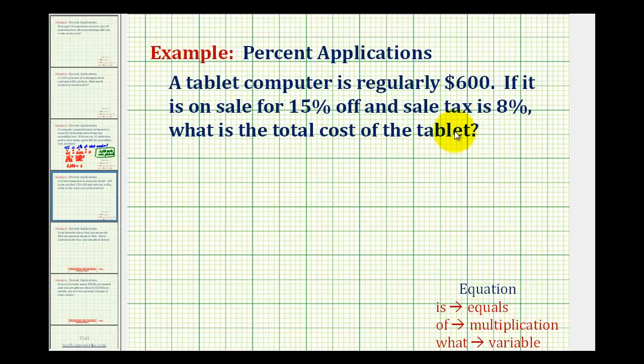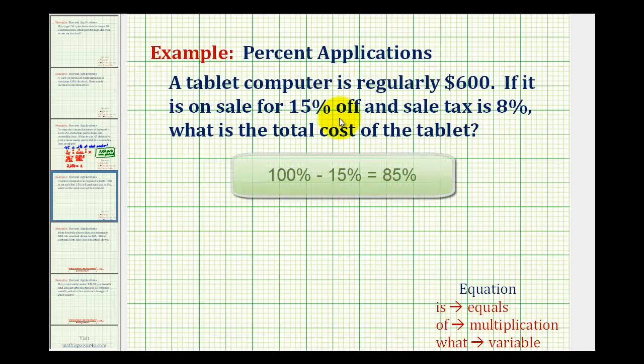We'll have to solve this in two steps. First, we'll determine how much the sale price would be. Then once we know that, we can determine the total cost by adding the sales tax. So if it's on sale for 15% off, then that means the price would be 85% of the original price.